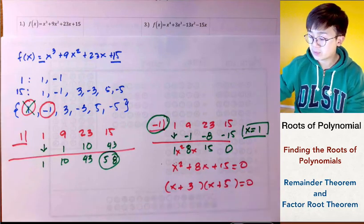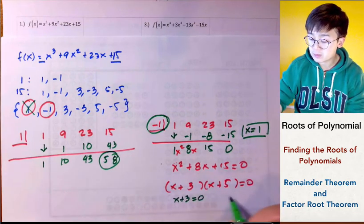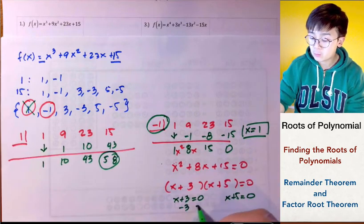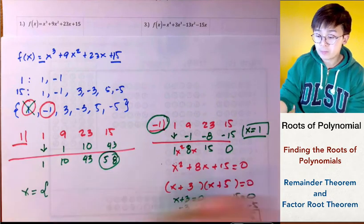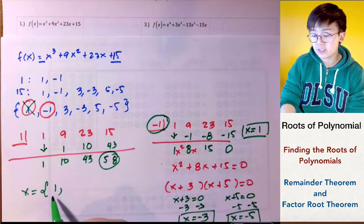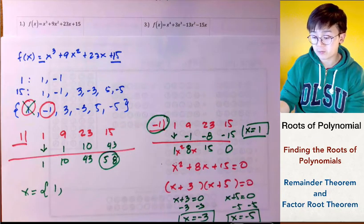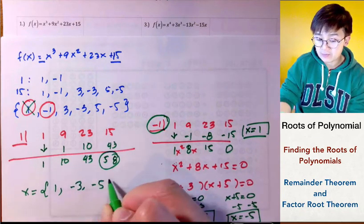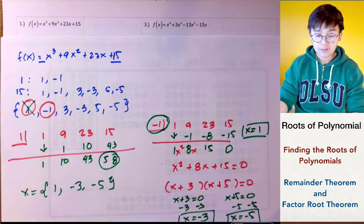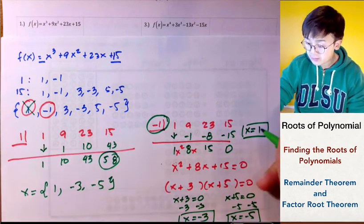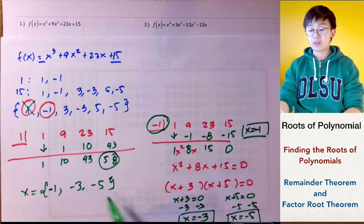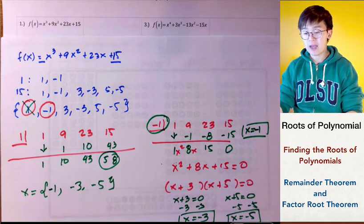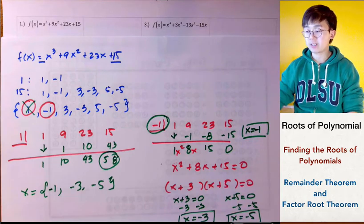Using the zero product property: x plus 3 equals 0 and x plus 5 equals 0, giving x equals negative 3 and x equals negative 5. So the three solutions of our cubic function are negative 1 (from synthetic division), negative 3, and negative 5 (from factoring the quadratic).